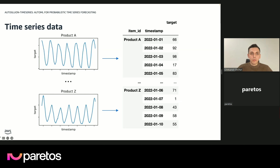Let's see how you can work with AutoGluon Time Series using your data. At the very minimum, the time series data consists of multiple separate univariate time series — for example, each time series might correspond to sales of a certain product measured at different points in time. You can combine all these time series into one big data frame or CSV file where at the very minimum you need just three columns: the first is the unique identifier for each item, the second is a timestamp telling us when the measurement was made, and the third column is the measurement itself — the time series value you are trying to forecast.